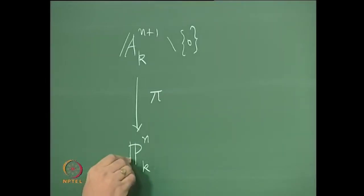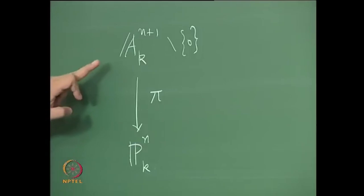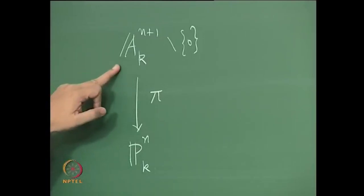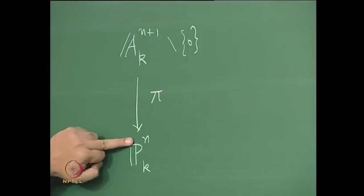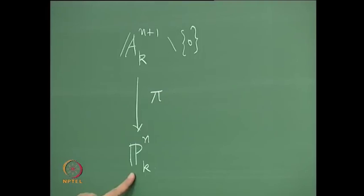What we saw last time is that this projective space can be given the Zariski topology in three ways. One is to take the quotient topology given by this map π, which makes use of the Zariski topology above. The second way is to declare closed sets to be the zero loci of a bunch of homogeneous polynomials in n+1 variables. The third way is to consider an open cover of projective space by open sets which are homeomorphic to affine space and then transport the variety structure.